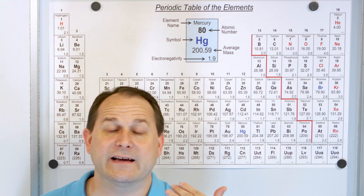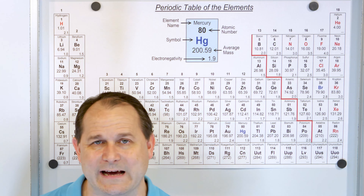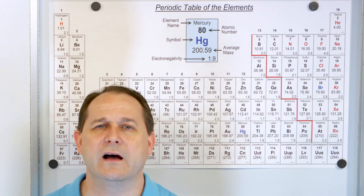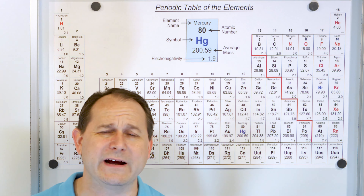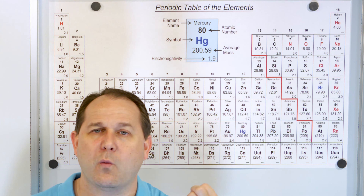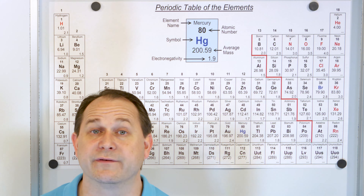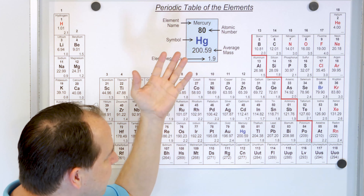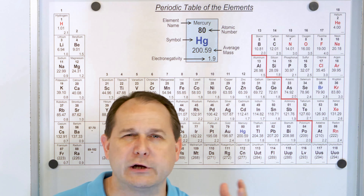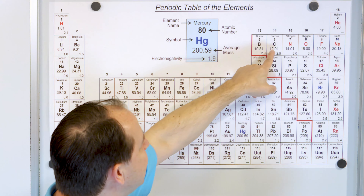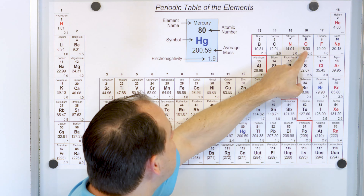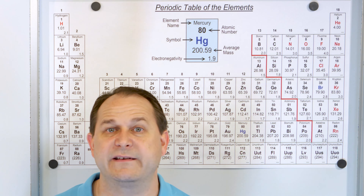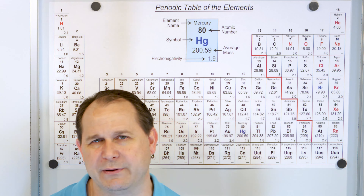Later, after chemistry one and two, you take a class called organic chemistry. Basically, organic chemistry is the chemistry of compounds that contain carbon. Carbon is a very special element because of the way it bonds to other atoms — it allows long molecules like DNA to exist. In organic chemistry you have carbon, nitrogen, oxygen, hydrogen, and a few others. Just a handful of elements gives rise to life and the complexity of DNA and very complex molecules.